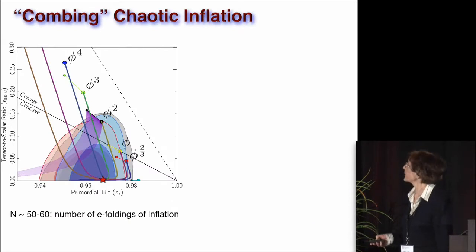So we call this mechanism combing chaotic inflation. You can start with φ^4, φ³, φ², φ, φ^(2/3), and you just apply, you add this coupling, and you see what happens. It is even easier to explain why all of these lines eventually end up at the same place.